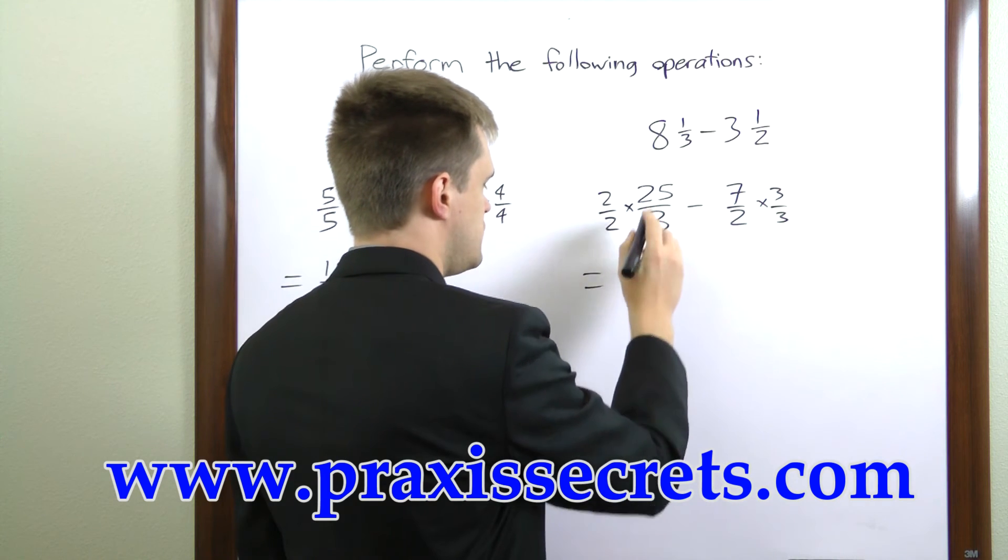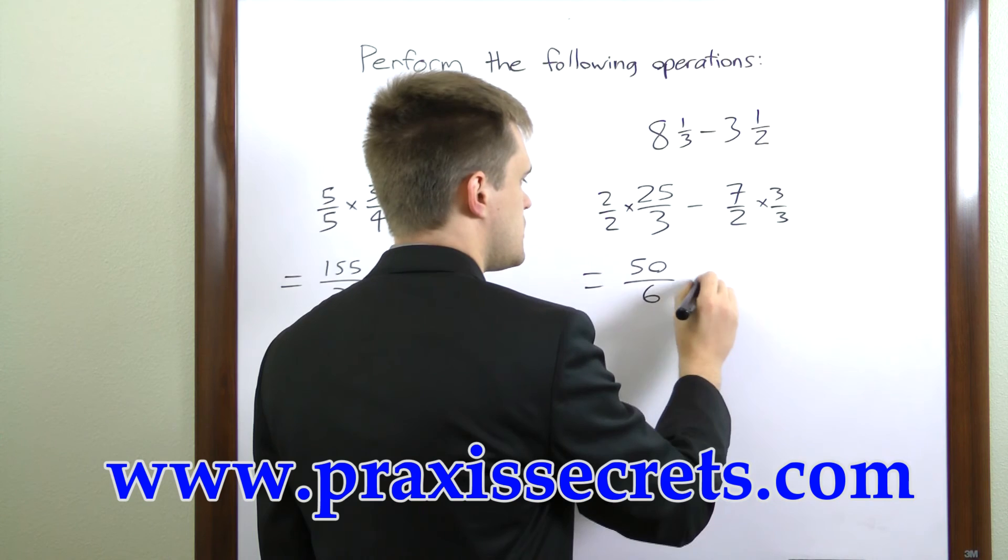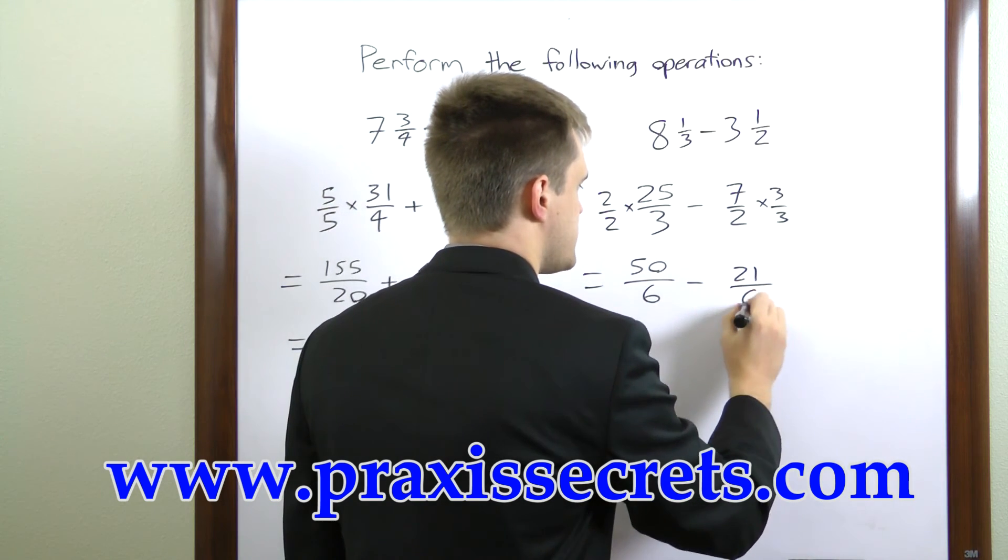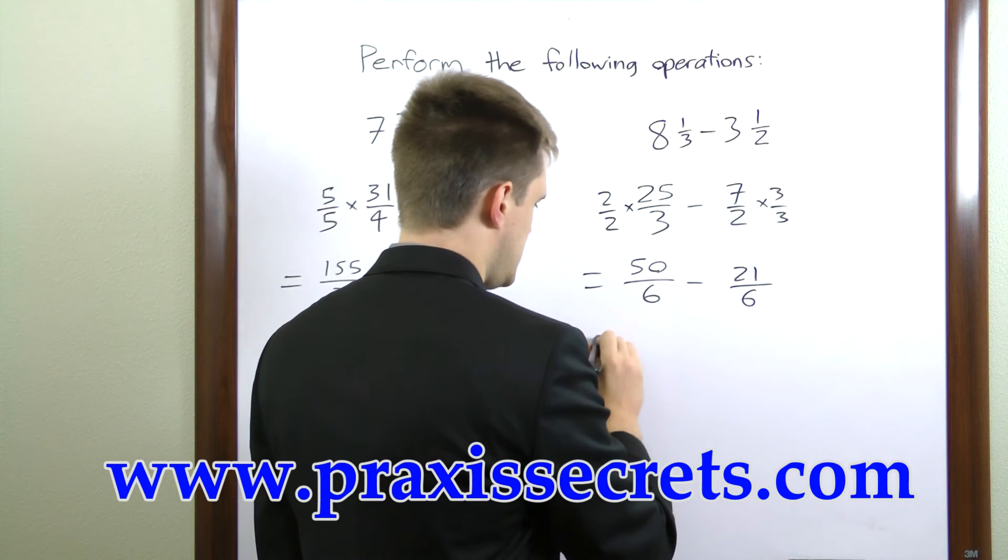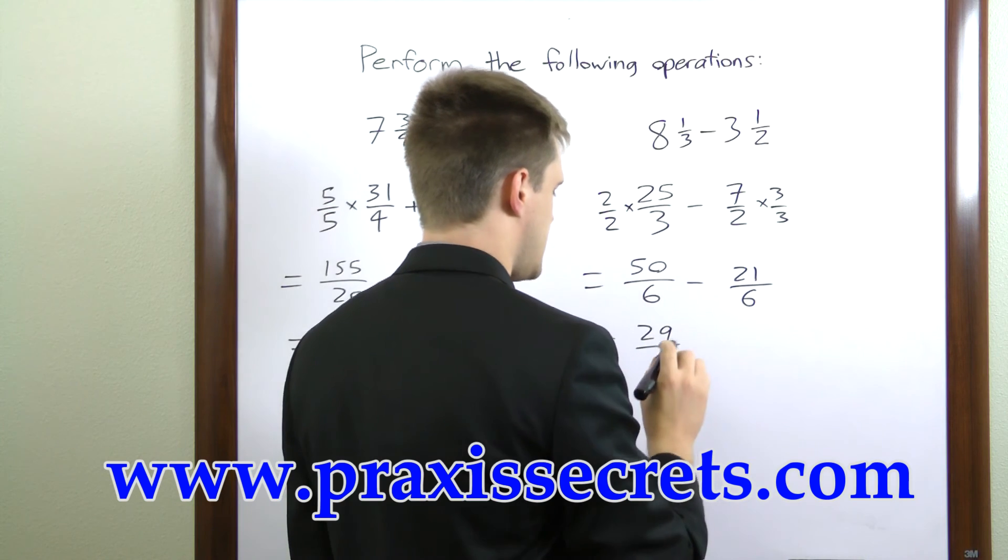This gives us 2 times 25 is 50 over 6 minus 7 times 3 is 21 over 6. 50 minus 21 is 29 and we keep the denominator of 6.